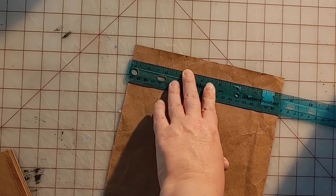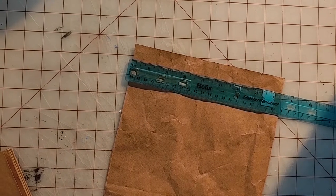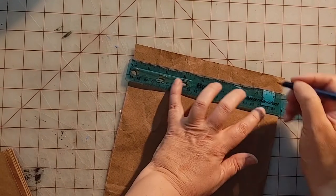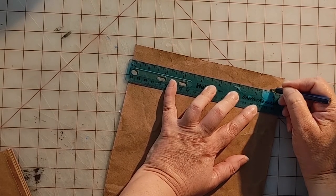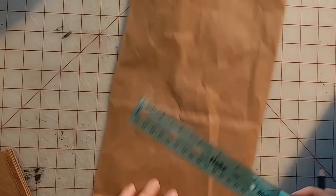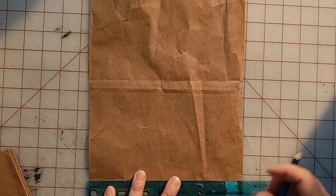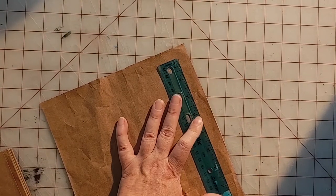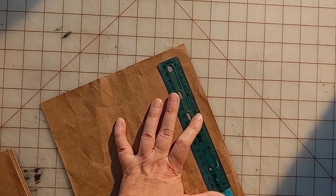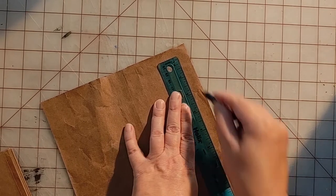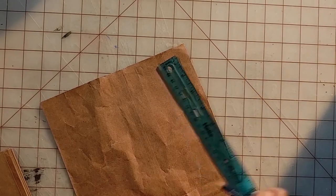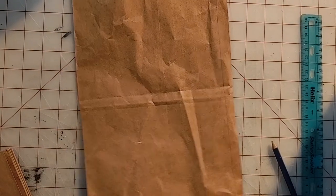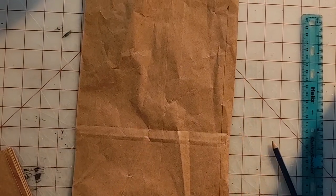So I'm just going to make a mark and then I'm going to join those two marks together and cut that piece off. So I want to end up with a piece of paper that's the same height as my book.